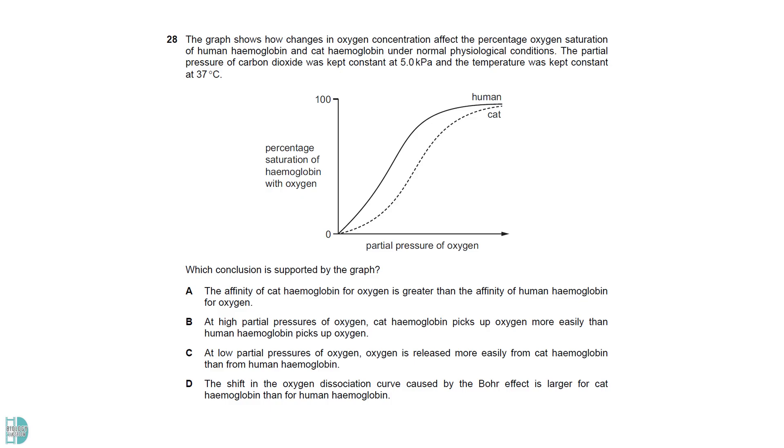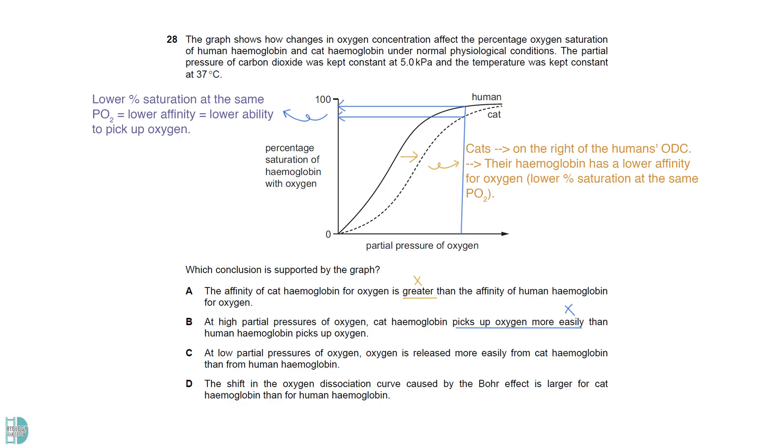The ODC of cats is on the right of the human's ODC. At the same partial pressure of oxygen, their percentage saturation is lower. This means their hemoglobin has a lower affinity for oxygen. So, A is wrong. B is incorrect because a lower affinity means a lower ability to pick up oxygen. C is the correct option. A lower affinity causes oxygen to be dissociated from the hemoglobin more easily. D cannot be the answer because the graph does not show us what the Bohr effect is like for the two organisms.